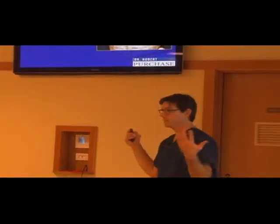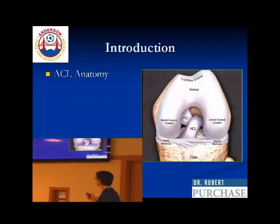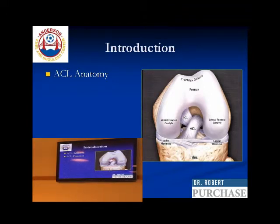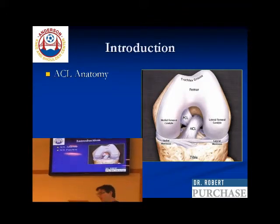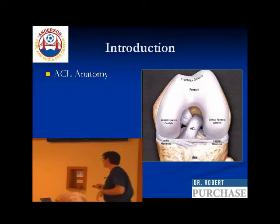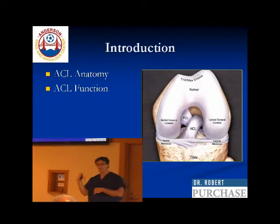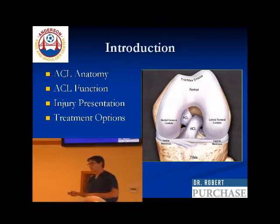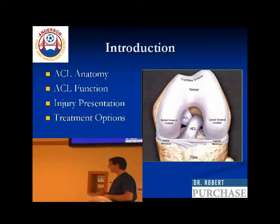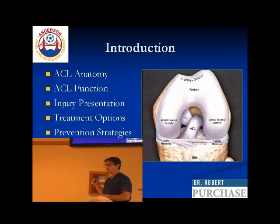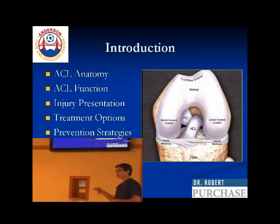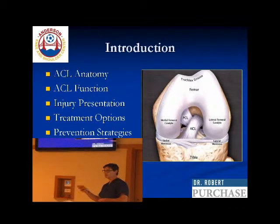So what I'm going to talk about is ACLs. We're going to start talking about some ACL anatomy, because we can't have enough anatomy. We're going to talk about ACL function, how people get injured and what that looks like, treatment options — both non-operative and surgical — and perhaps the two most important slides: how do we prevent injuries, because an ounce of prevention is better than a pound of cure. And then we'll briefly talk about how we're doing ACLs today, how it's better than even two years ago.